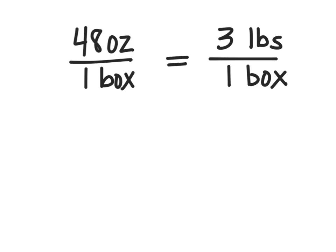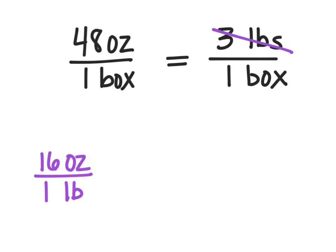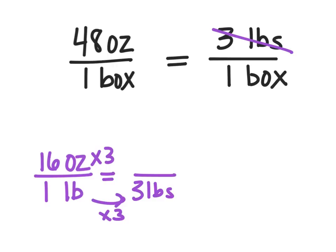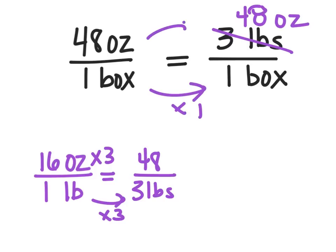Let's try one more. 48 ounces in one box — is that equal to three pounds in a box? First, look at your labels: I'm comparing boxes to boxes, that's good. But this one's ounces and this is pounds. I know there are 16 ounces in one pound. I'm going to change three pounds to ounces. In one pound there are 16 ounces, so in three pounds I triple that — 16 times 3 is 48. So three pounds is the same as 48 ounces. From one to one, that's times one; 48 times one is also 48. These are equal — they actually say the exact same thing. So these rates are equivalent.